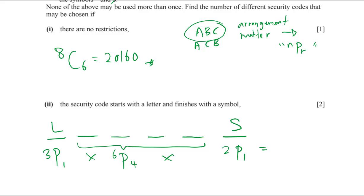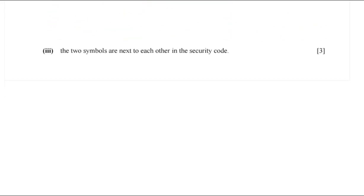So the calculation is: if you want a letter, choose from the three letters; if you want a symbol, choose from the two symbols; and the middle positions are chosen randomly from whatever remains. The full calculation is 3P1 × 6P4 × 2P1, which gives the correct answer.